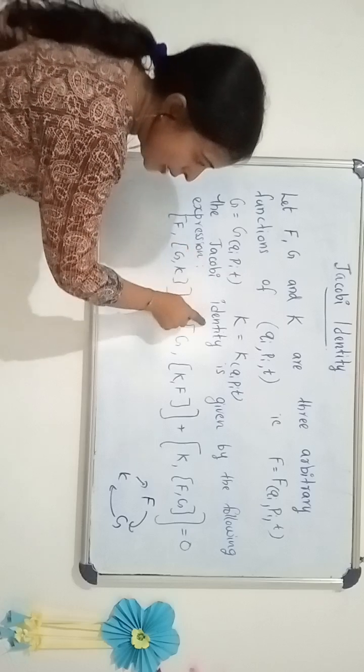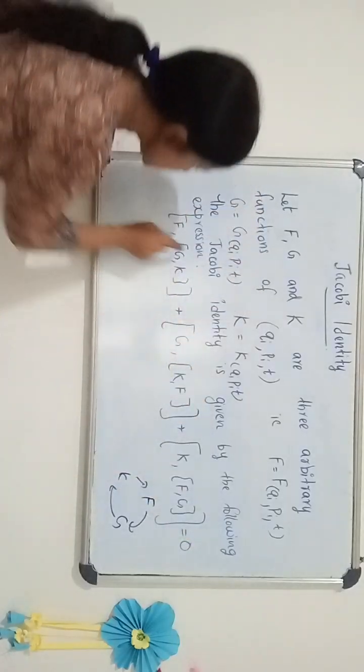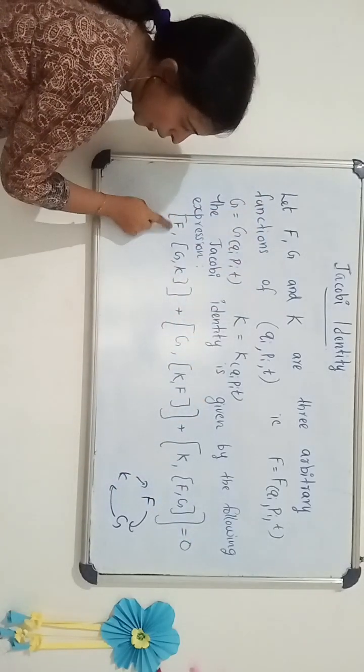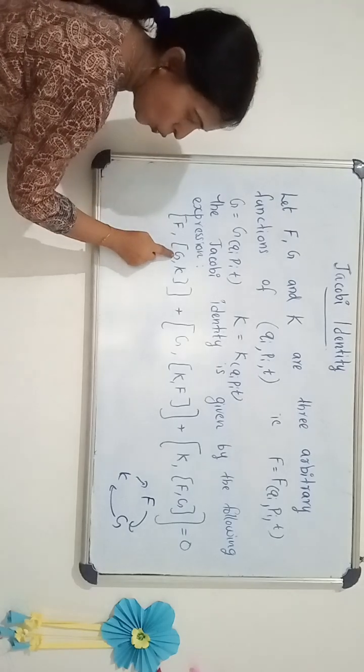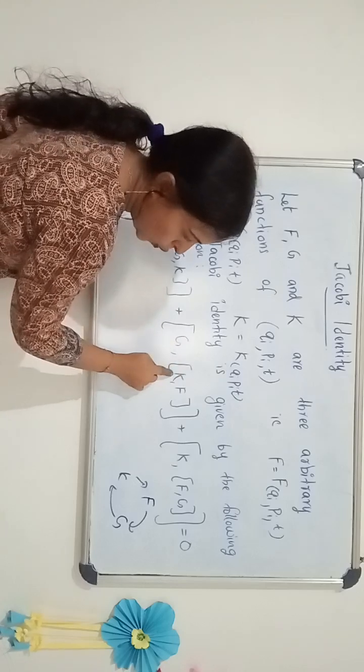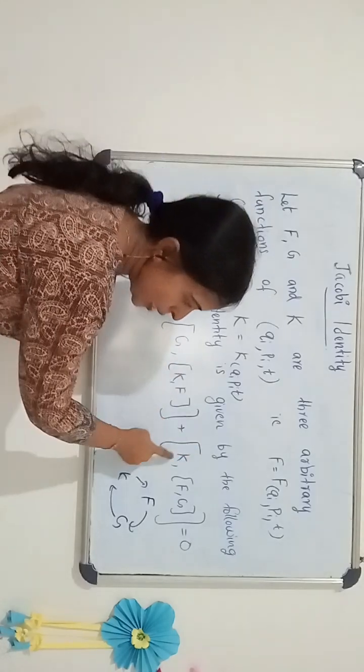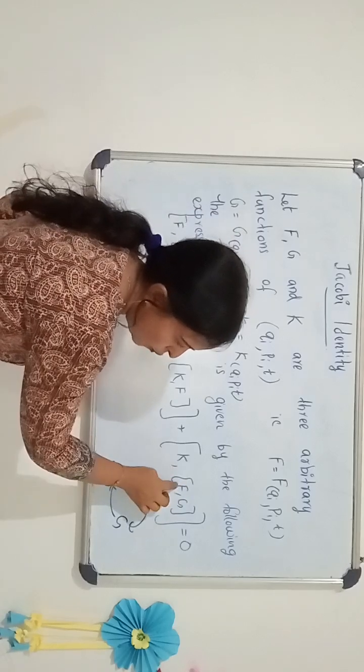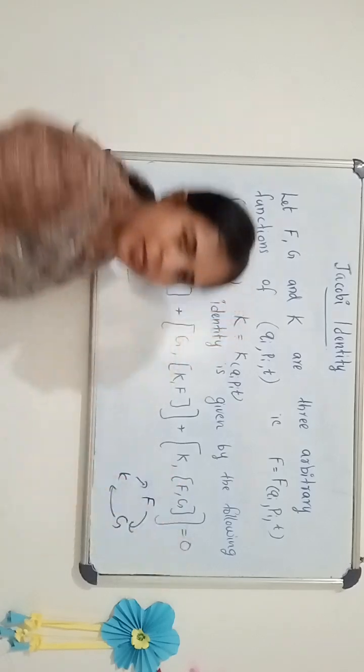Then the Jacobi identity is given by the following expression: The Poisson bracket of F, G, K plus the Poisson bracket of G, K, F plus the Poisson bracket of K, F, G which is equal to 0.